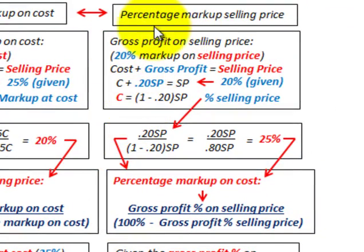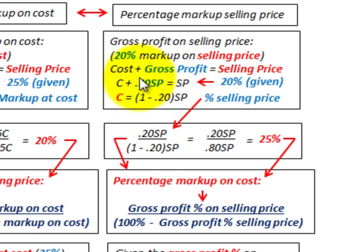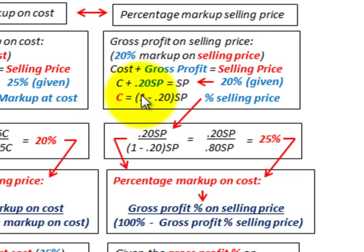Now let's calculate the percentage markup on selling price. We'll use a 20% markup on our selling price. The same equation applies: cost plus gross profit equals selling price. We substitute the gross profit with 20% of our selling price, so cost plus 0.20 times selling price equals selling price. Using algebra, cost equals 100% minus 20% times our selling price.